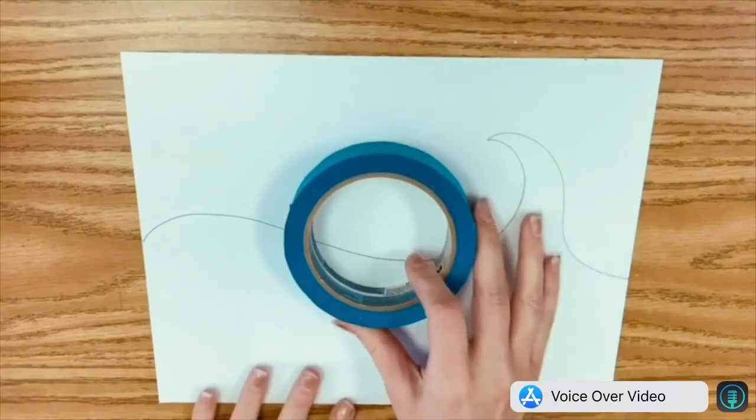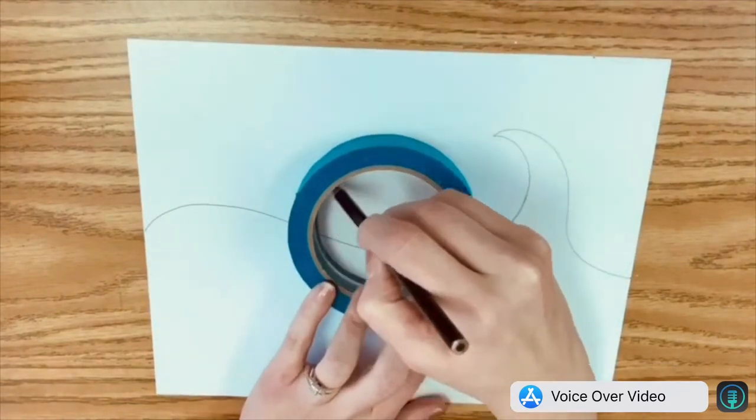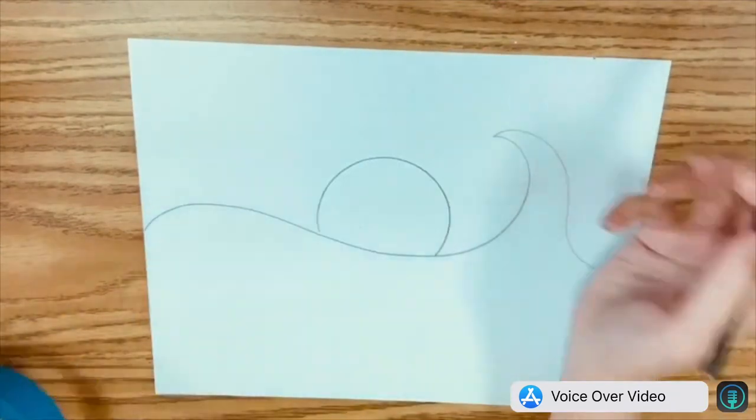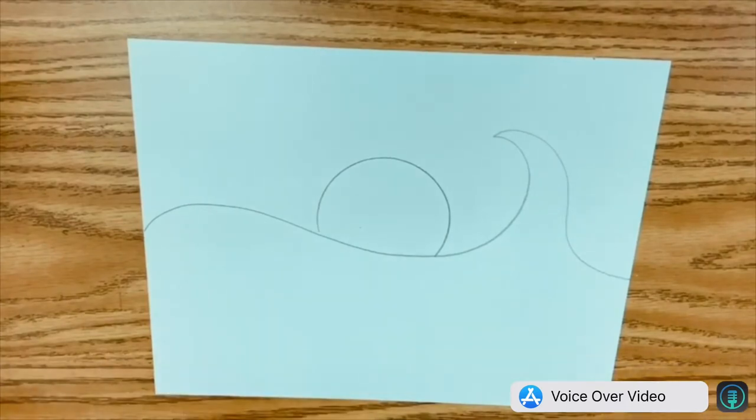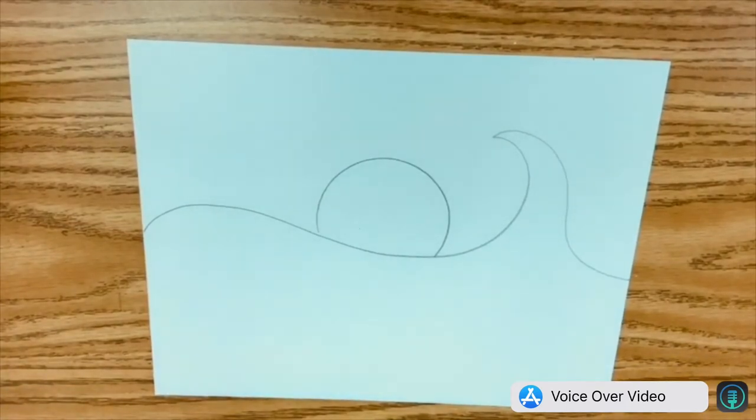That's however you want to do it. And then you can find something circular in your house to trace in the middle of that wave to make your sun. I used a roll of tape. You can use a lid to a jar, whatever works.